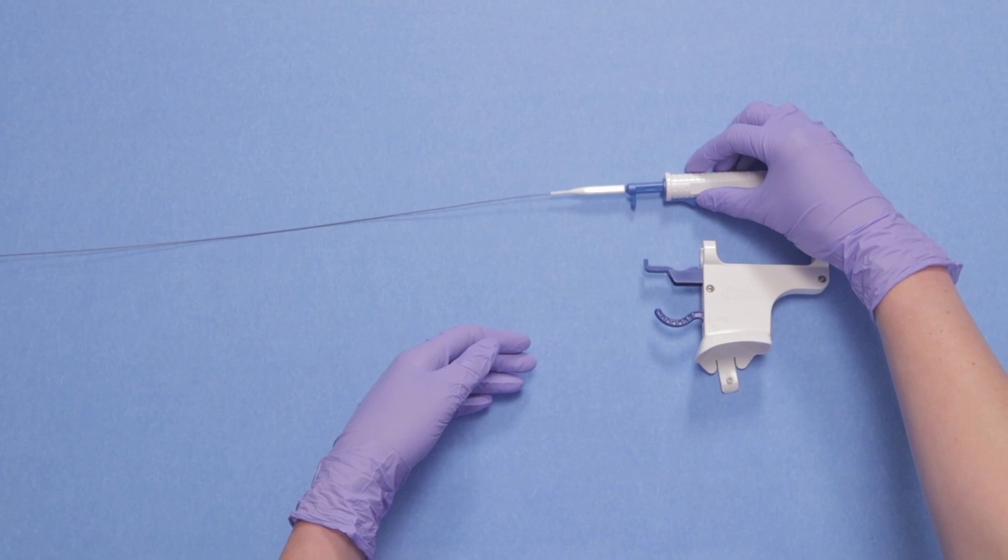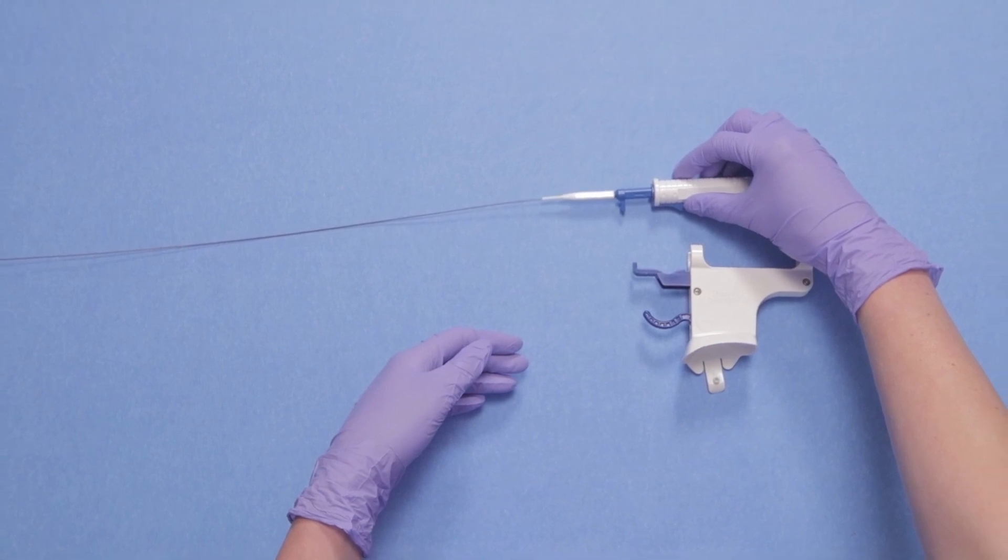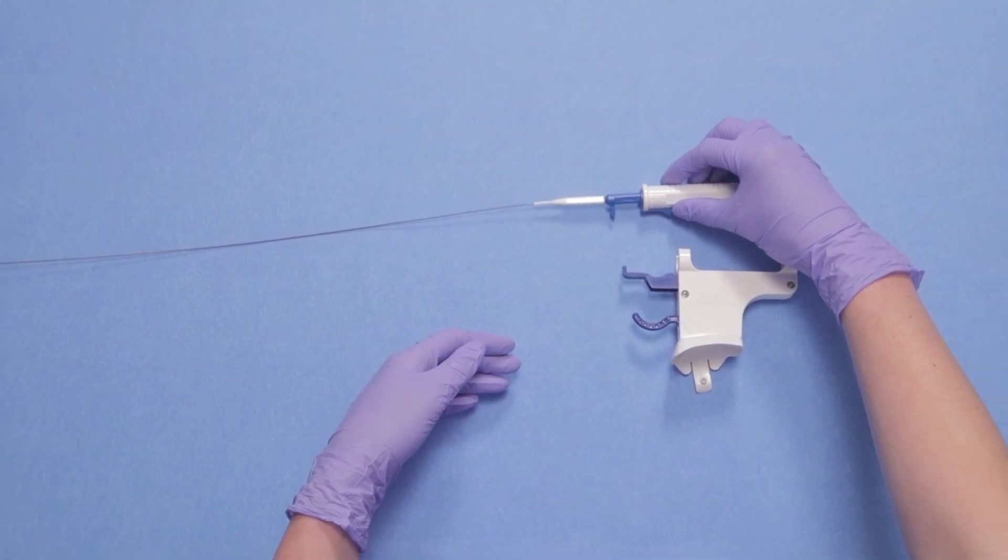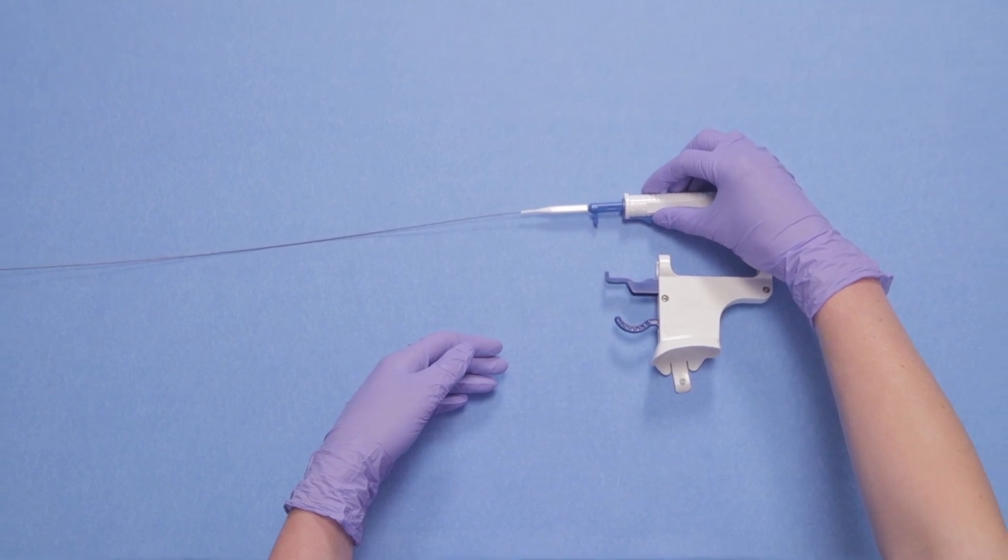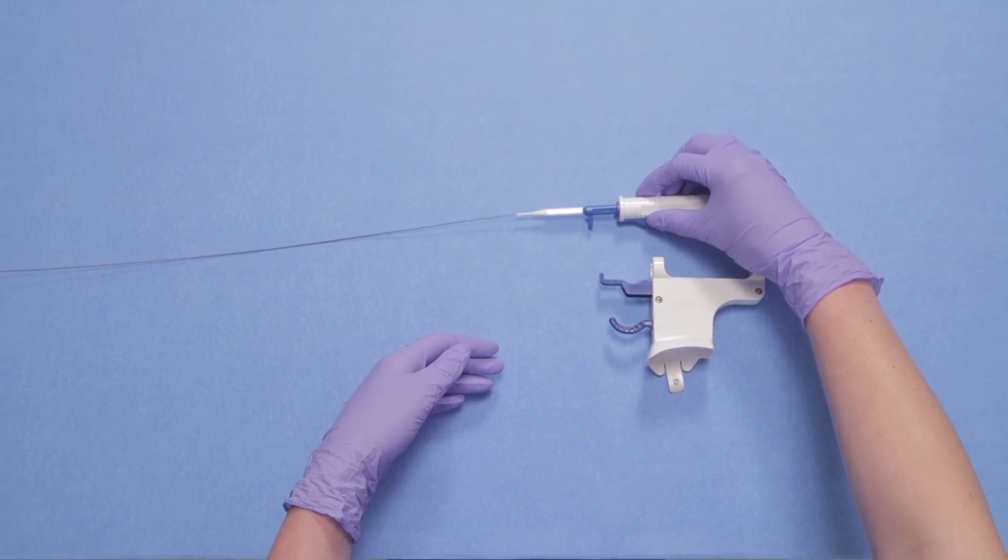Please know that your Boston Scientific basket handle will look different depending on the specific nitinol retrieval device you are using. In this demonstration, we are using the Dakota retrieval device.